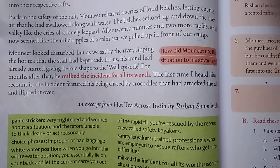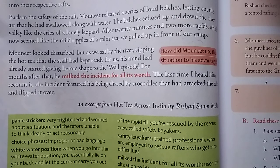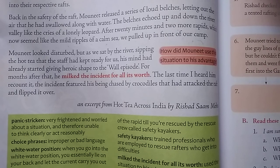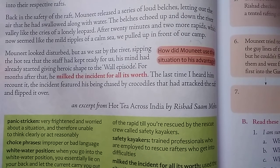Instead of taking a life lesson from the event, Maunit completely twisted the details and gave the entire episode a heroic shape in order to prove how brave and courageous he had been, presenting misleading facts while narrating it to others.